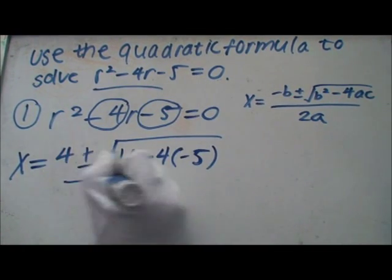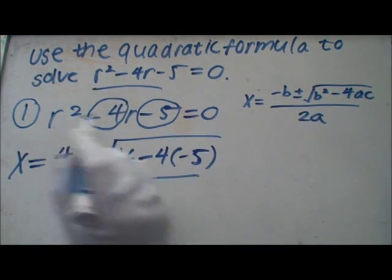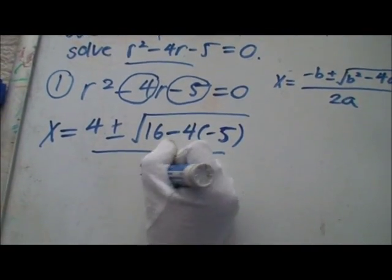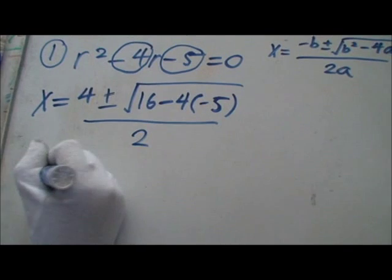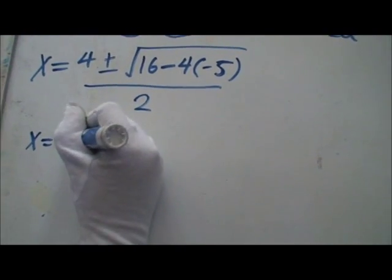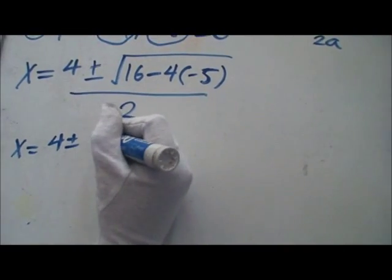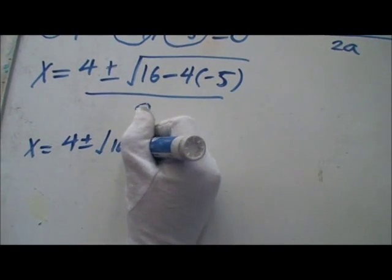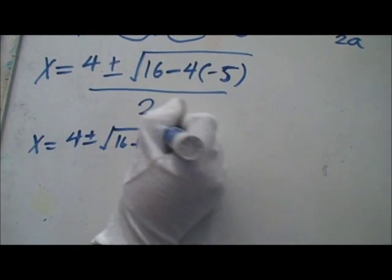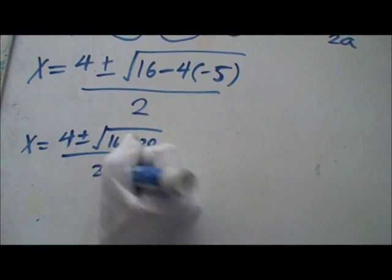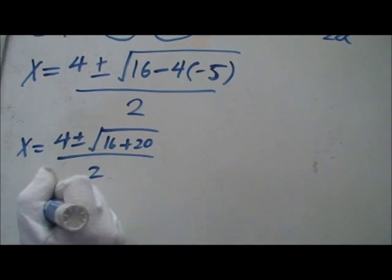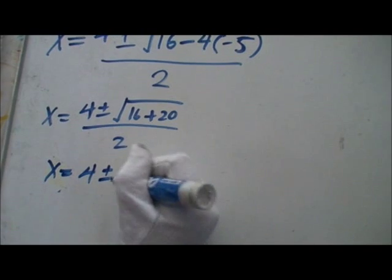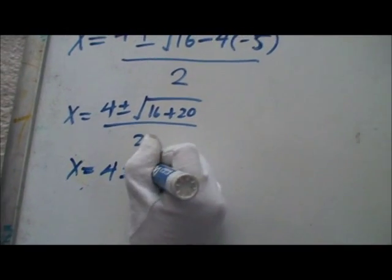Okay, but a is 1, and 2 times 1 is 2. So, x equals 4 plus or minus the square root of 16 plus 20, over 2. x equals 4 plus or minus the square root of 36, over 2.